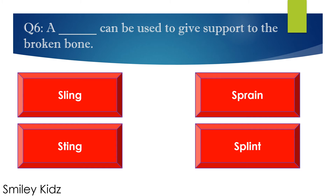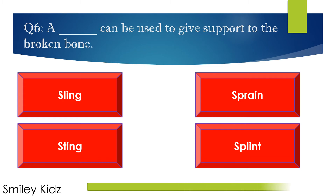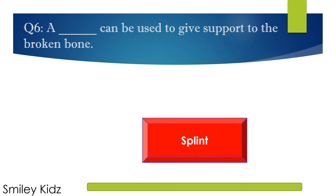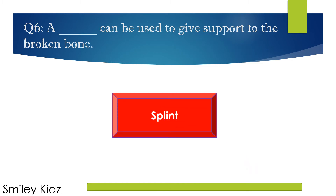Question number 6. A dash can be used to give support to the broken bone. Options are A. Sling, B. Sprint, C. Sting, and D. Splint. Your time starts now. Your time is up. The right answer is splint. A splint can be used to give support to the broken bone.